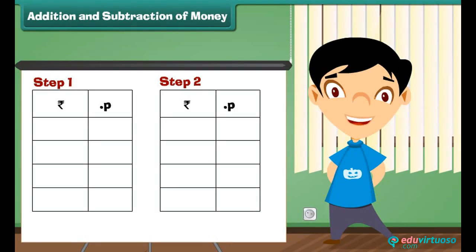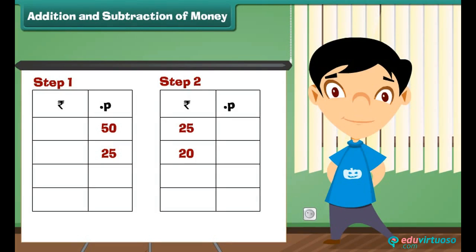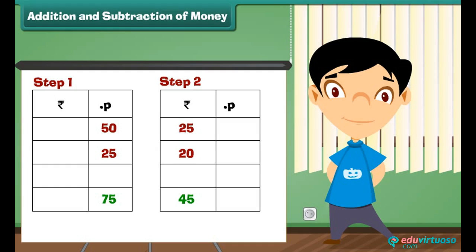Let us learn how to add 25 rupees 50 paise and 20 rupees 25 paise. Step 1: Add the numbers in the paise column. 50 plus 25 is equal to 75 paise. Write 75 under the paise column. Step 2: Add the numbers in the rupees column. 25 plus 20 is equal to 45. Write 45 under the rupees column.